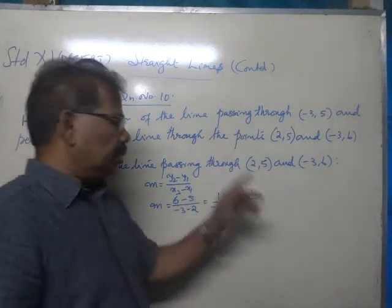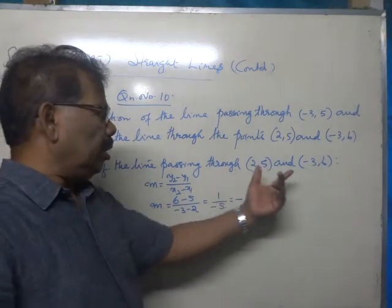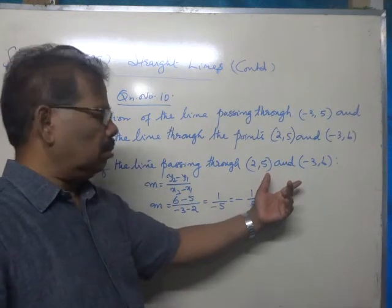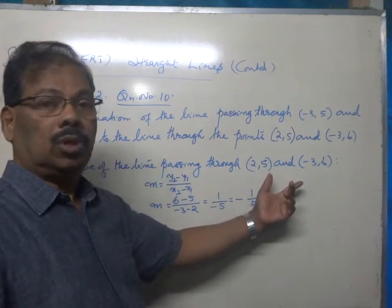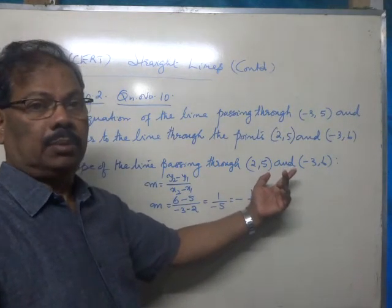Now, the required line is perpendicular to the line joining these two points. Therefore, the product of the slopes of these perpendicular lines will be -1.